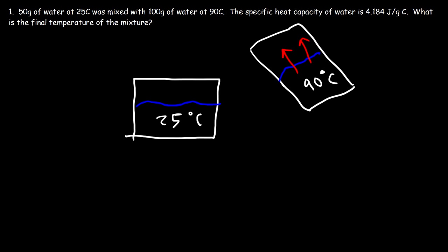Now we know the final temperature has to be somewhere between 25 and 90. If you average those two numbers — add them up and divide by 2 — the average is 57.5 degrees Celsius. So here's a question: will the final temperature be 57.5? Will it be between 25 and 57.5? Or will it be between 57.5 and 90? What would you say?